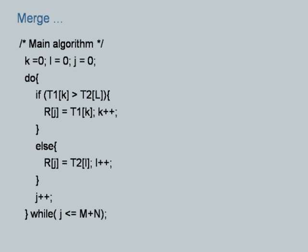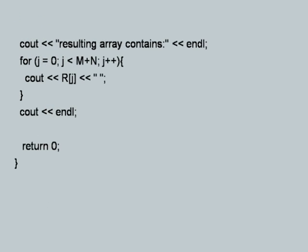For output, iterate J from 0 to M plus N minus 1 and print R[J] with blank spaces. This gives the series of merged elements. The resulting array correctly contains all elements in sorted descending order from both input arrays.